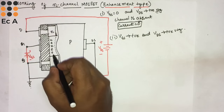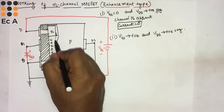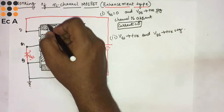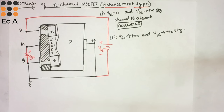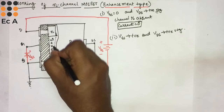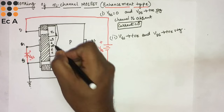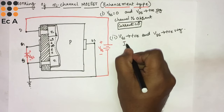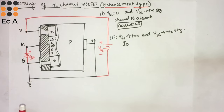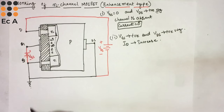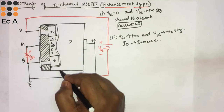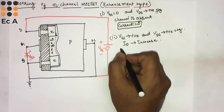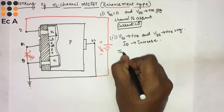Once a sufficient amount of electrons are accumulated towards the gate, these electrons will start moving towards the drain, which constitutes the drain current ID. The gate voltage at which the current starts conducting in an enhancement type MOSFET is called the threshold voltage.